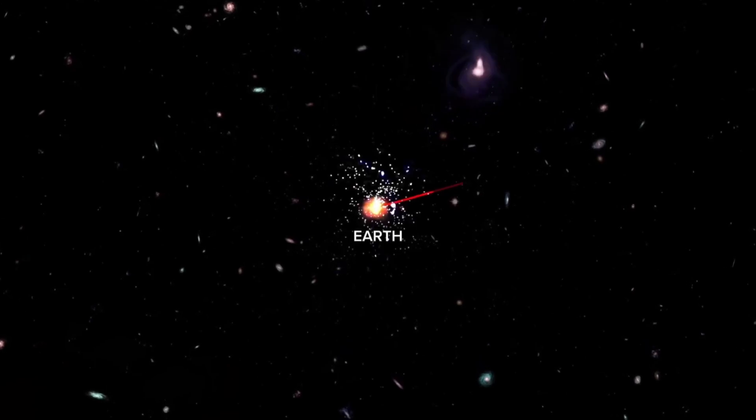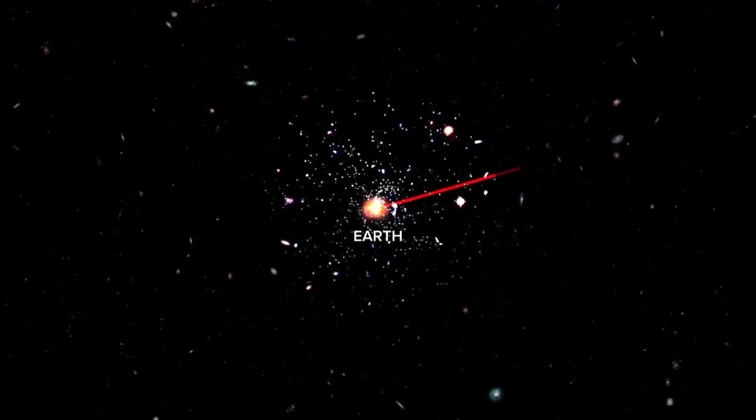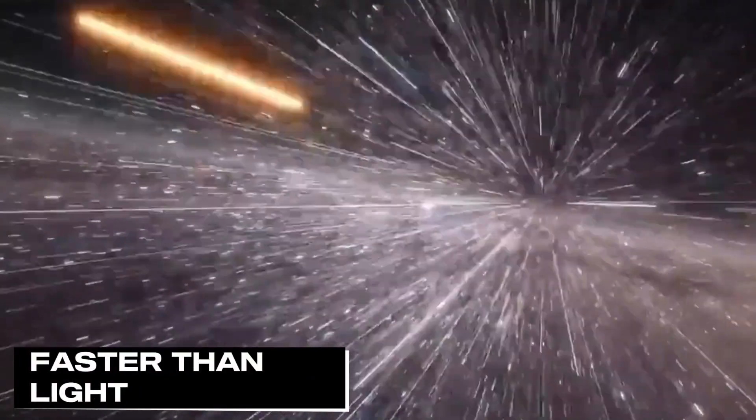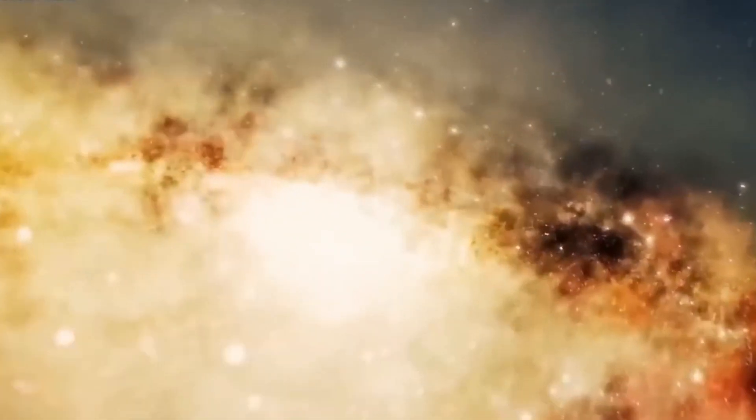In recent observations, scientists have confirmed that 97% of galaxies in the observable universe are moving away from us faster than the speed of light. But how can this be true when one of the fundamental laws of physics is that nothing can travel faster than light?